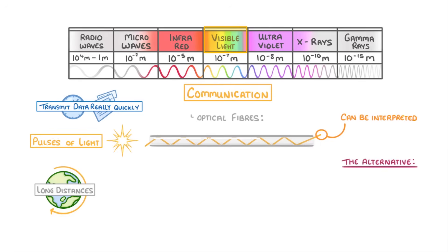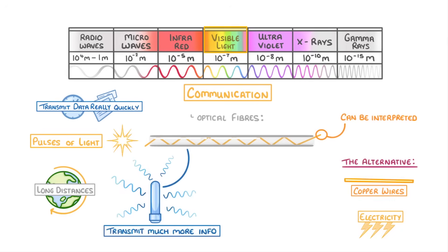The alternative to using optical fibres to transmit our information is using copper wires and electricity. But the advantage of optical fibres is that they can transmit much more information, and the signals are less likely to be distorted during transmission.